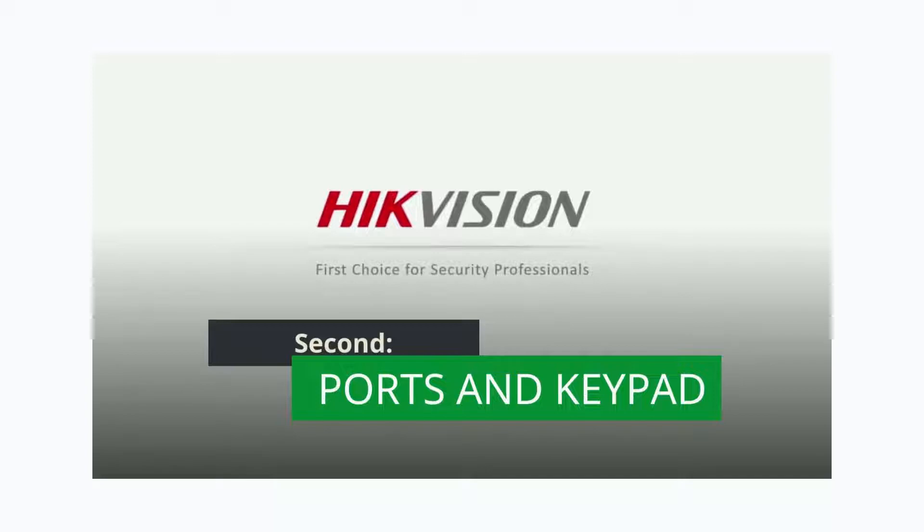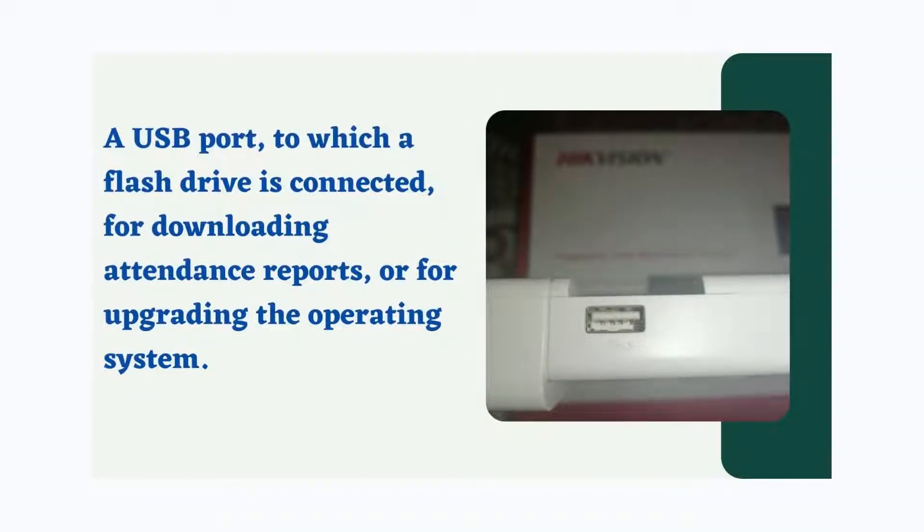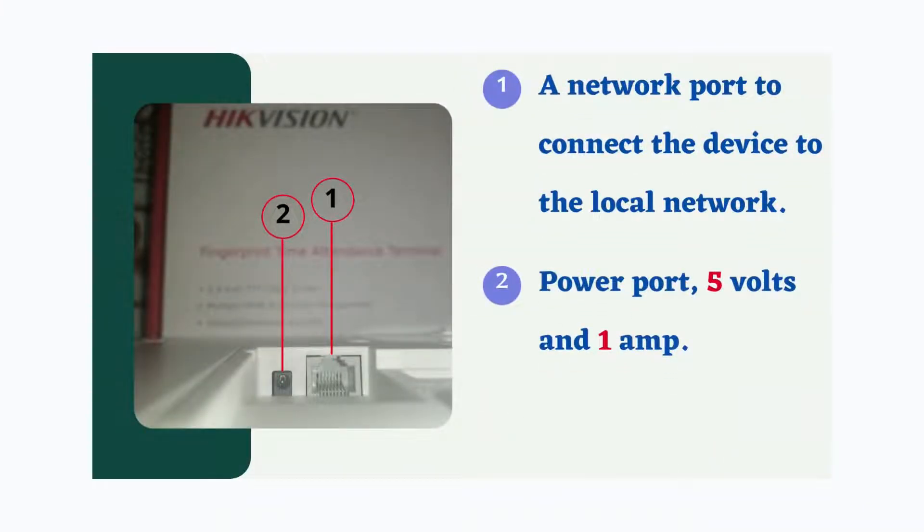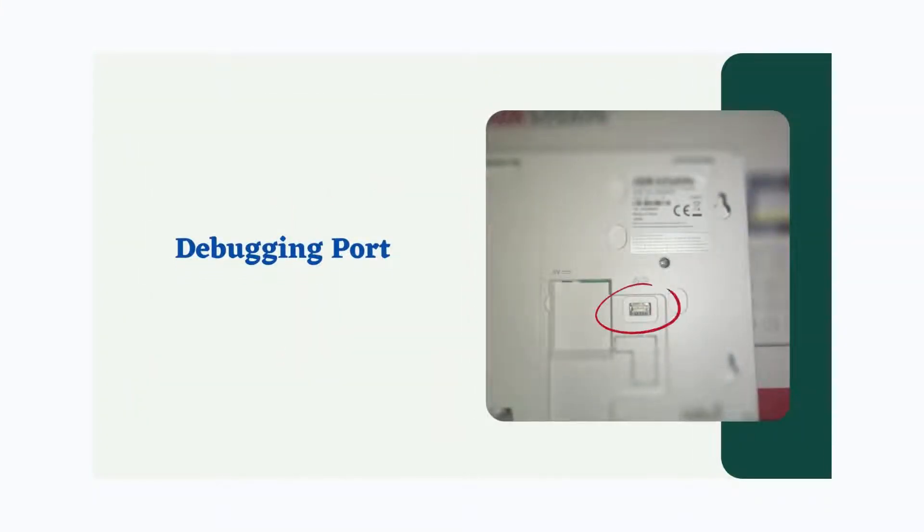Second, ports and keypad. The device has a USB port to which a flash drive can be connected for downloading attendance reports or upgrading the operating system. A network port connects the device to the local network. The power port is 5 volts and 1 ampere. There's also a debugging port.